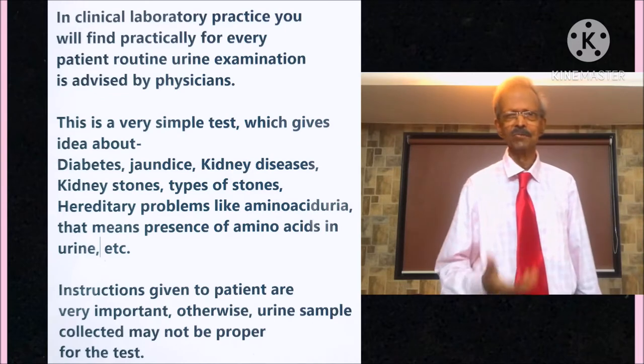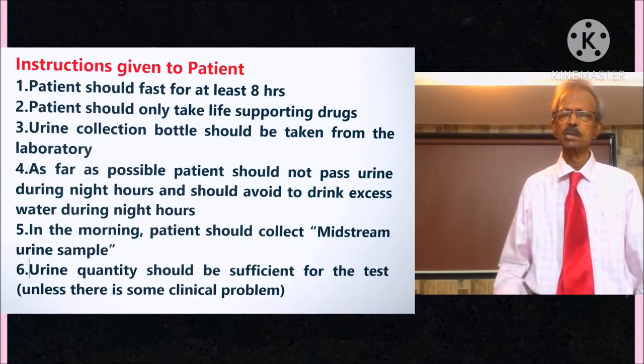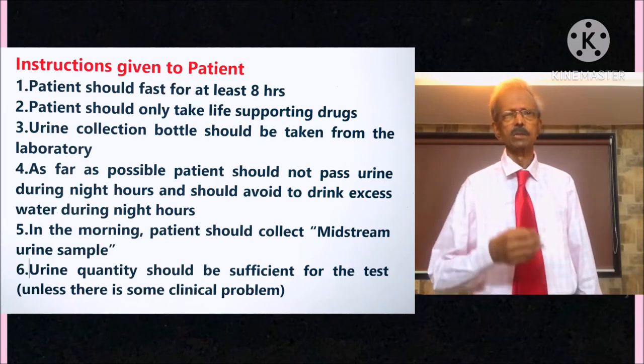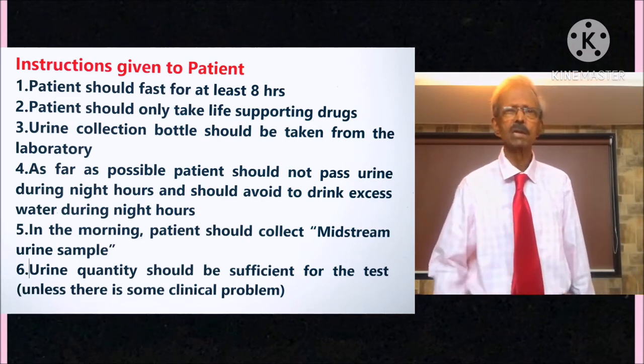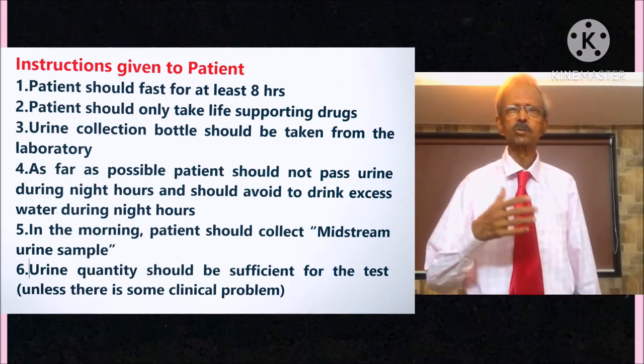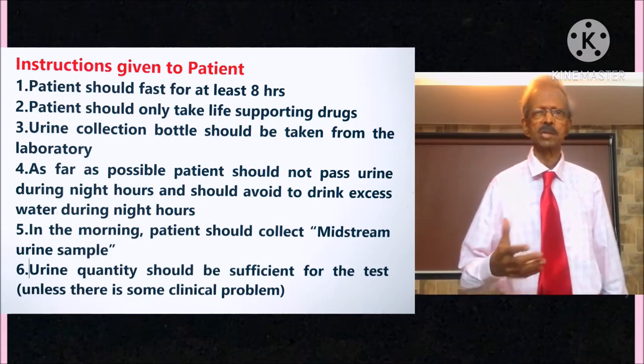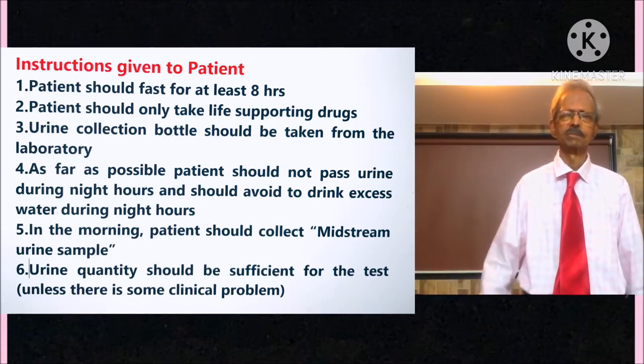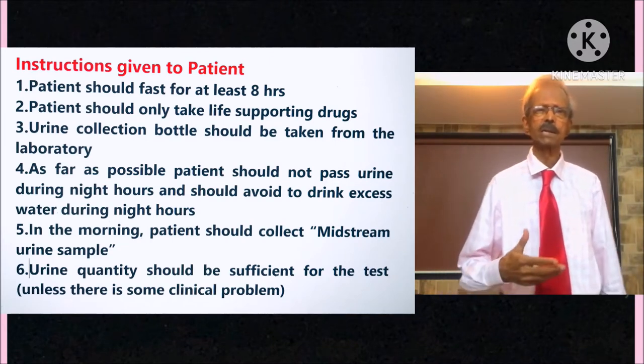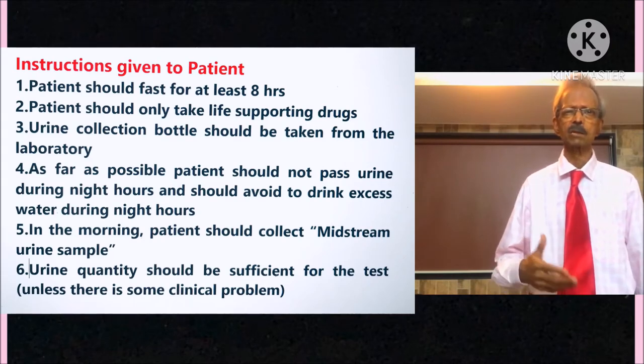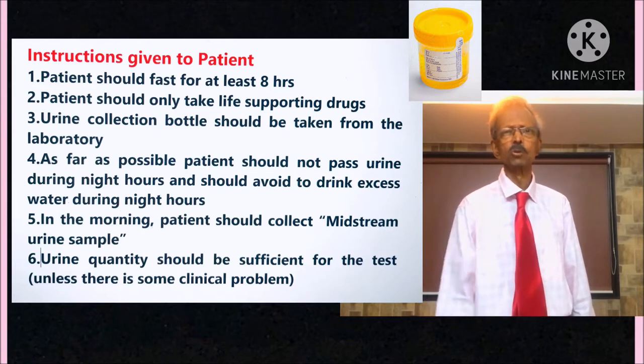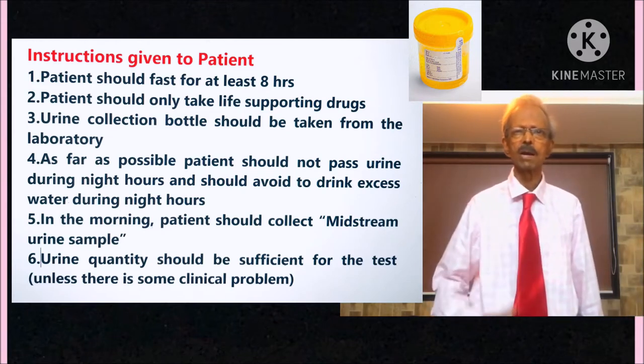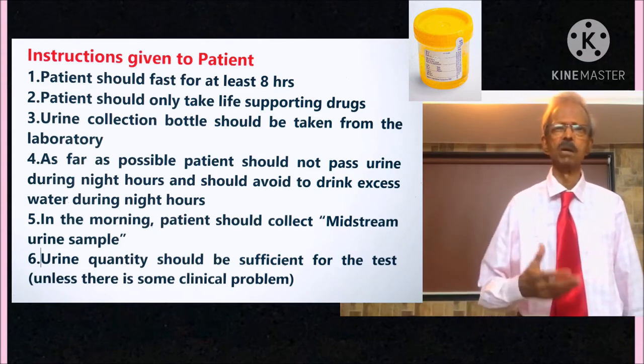Now regarding the instructions given to the patient. Instructions given to the patient are very important, otherwise urine samples collected may not be proper for the test. Following instructions are very important: Patients should fast for at least 8 hours. Patients should take only life supporting drugs and other drugs which might impart color to the urine should be avoided. Urine collection bottle should be taken from the laboratory. As far as possible, patients should not pass urine during night hours and should avoid drinking excess water during night hours.